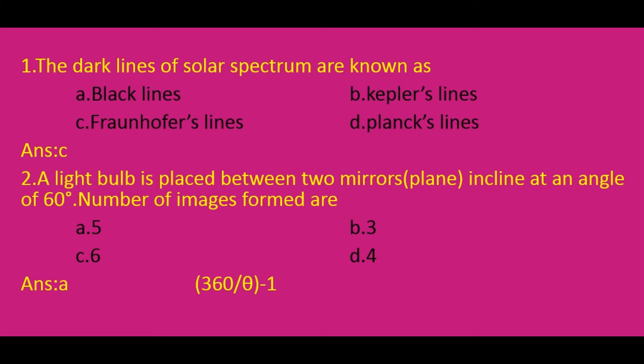The first question is: the dark lines of solar spectrum are known as? The answer is option C, Fraunhofer lines. Dark lines are caused by selective absorption of the sun or star's radiation at specific wavelengths by various elements existing as gases in its atmosphere. So the dark lines are named Fraunhofer lines.